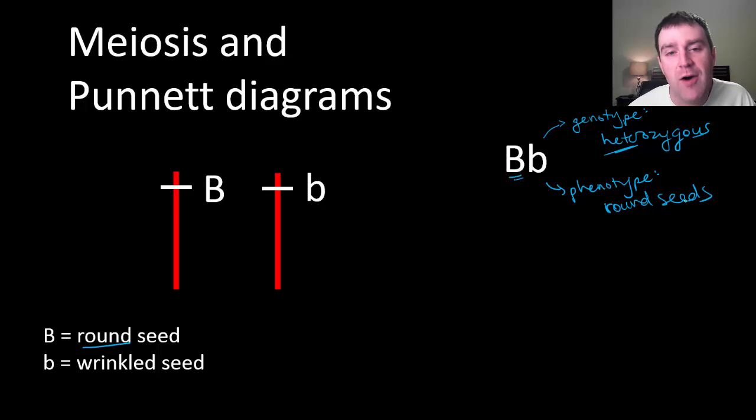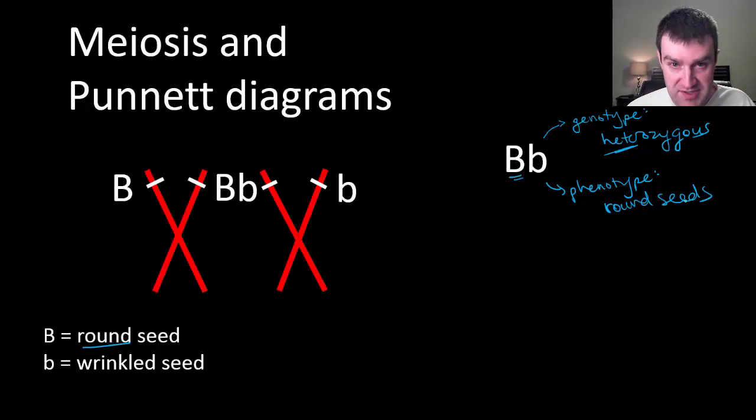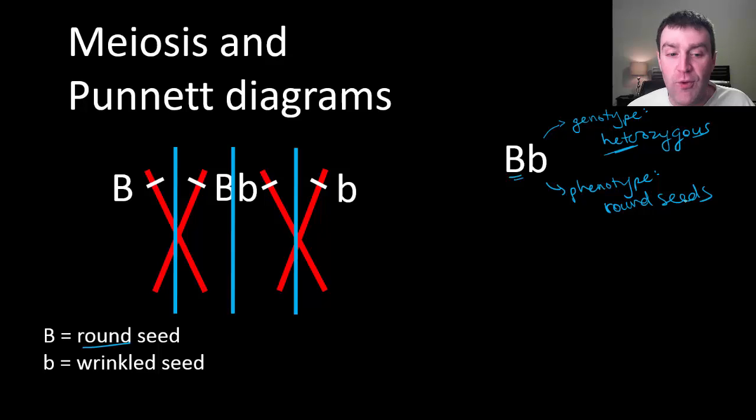Okay, so how might this organism pass on its genes to offspring through its gametes? Well, remember in the process of meiosis, we would copy these chromosomes and then eventually split up the homologous pairs and split up the copies. And so we'd have four gametes, and these would all be the gametes.